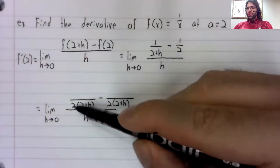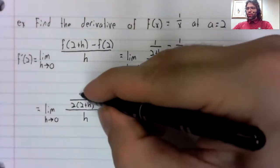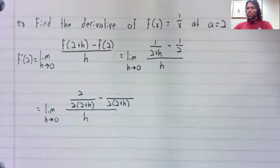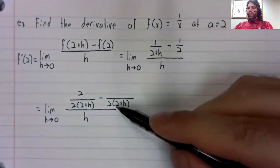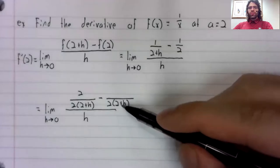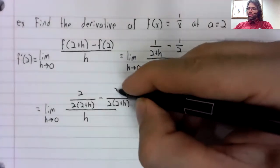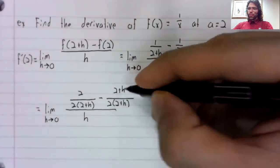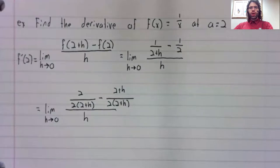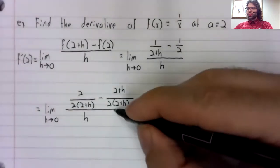And the common denominator of 2 and 2 plus h is the product of those two terms. So to get this 2 in the denominator, we multiply top and bottom by 2. To get this 2 plus h in the denominator, we multiply top and bottom by 2 plus h.